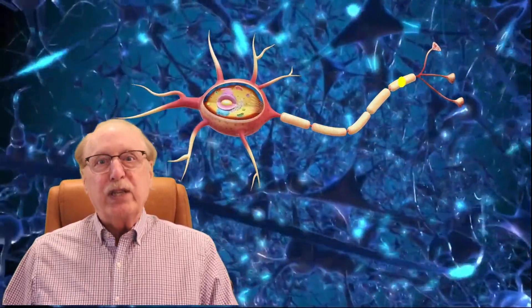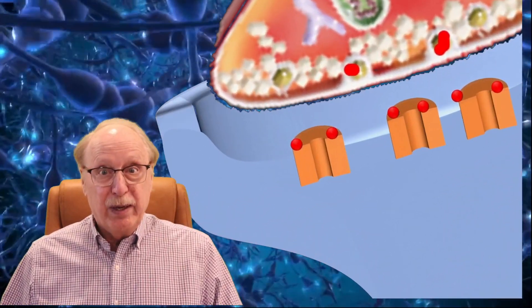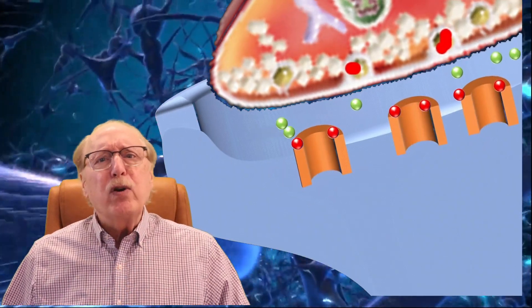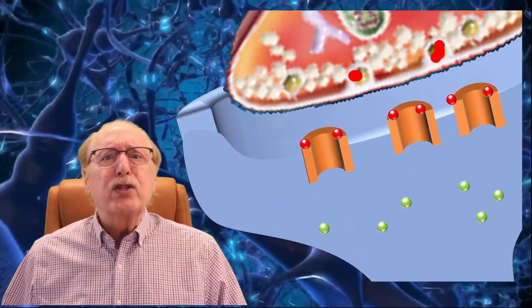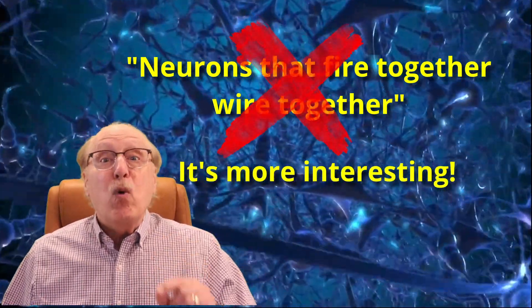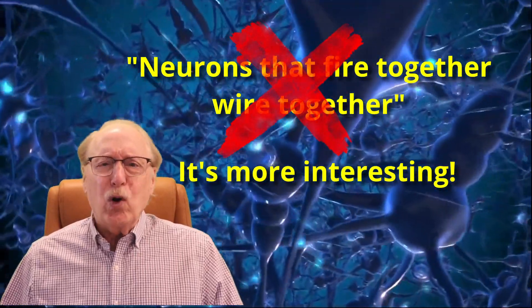In the previous video in this series, I explained what neurons do, how they are interconnected by synapses, and that the weight of synapses can be used as a form of non-volatile memory. But how do synapse weights change? I'll show you that it's a lot more interesting than just neurons that fire together, wire together, and what you think you know about Hebbian learning probably doesn't work.